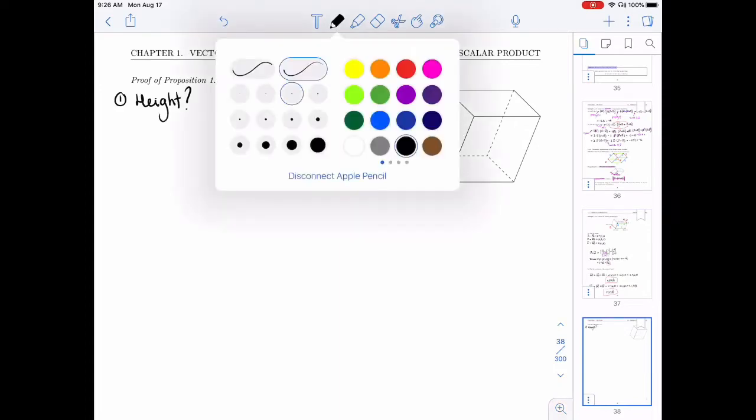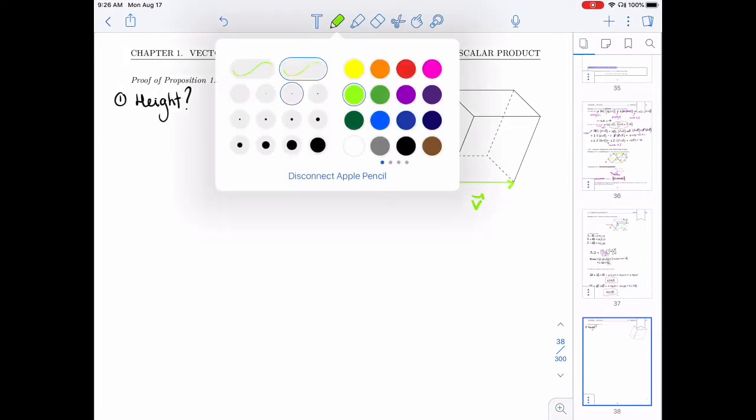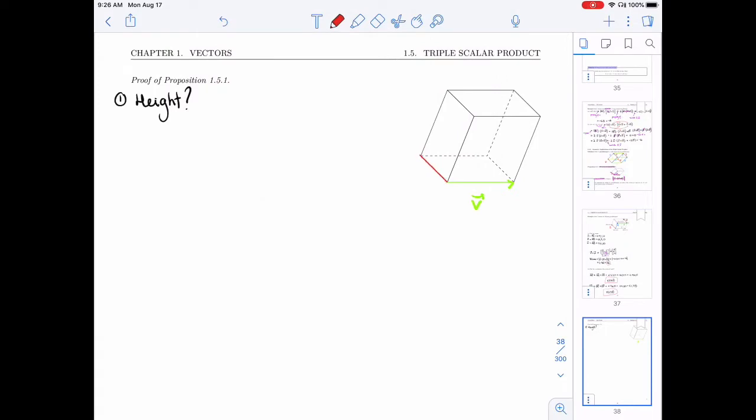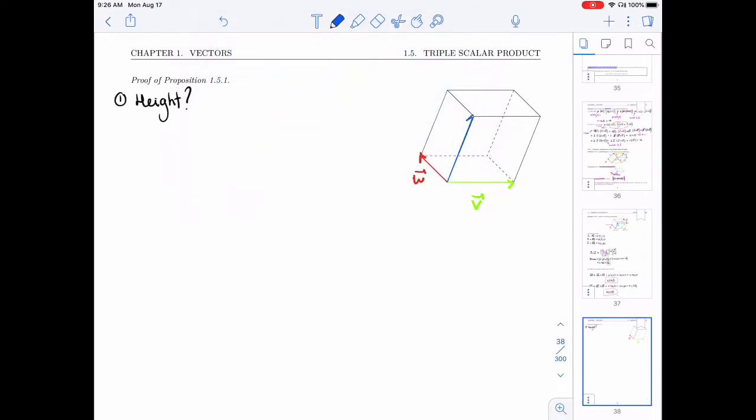All right, so let me put back what we had. We had this was v, this is w, and then we have in blue, we have u right here. All right, so we want the height. I'll draw it here from the end of u. I'll draw a perpendicular going down to the base. That's going to be my height. I'm going to think of it as a vector. That's going to help us compute it.